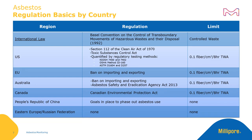The US, EU, Australia, and Canada share limits of 0.1 fiber per cubic centimeter per 8-hour TWA, and place bans or strict controls on import or export. In the US, regulatory testing methods are published by NIOSH, either 7400 or 7402, OSHA with Method ID 160, and ASTM, including Methods D1604 and D257.